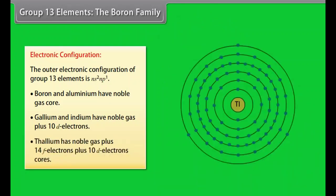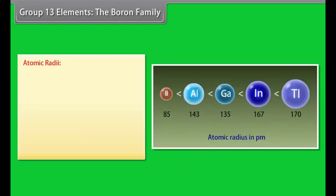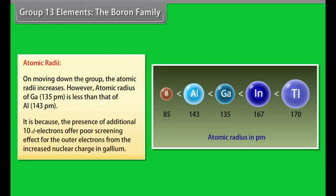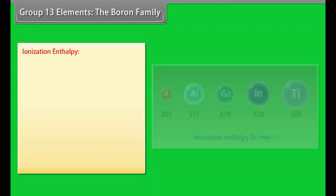Atomic radii. On moving down the group, the atomic radii increases. However, atomic radius of gallium 135 picometer is less than that of aluminium 143 picometer. It is because the presence of additional 10D electrons offer poor screening effect for the outer electrons from the increased nuclear charge in gallium.